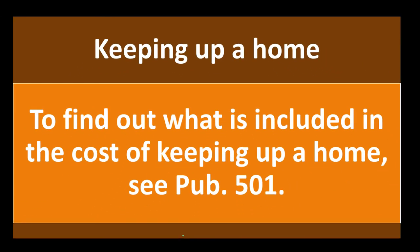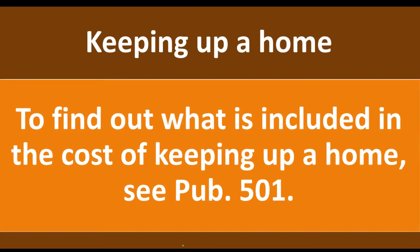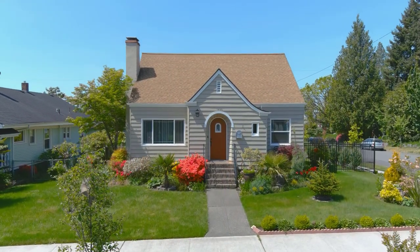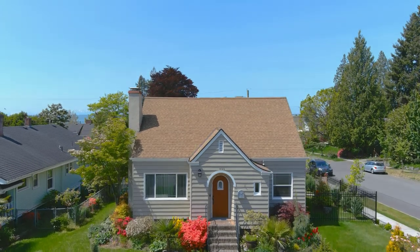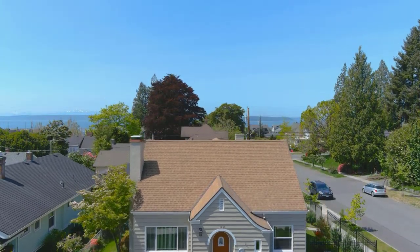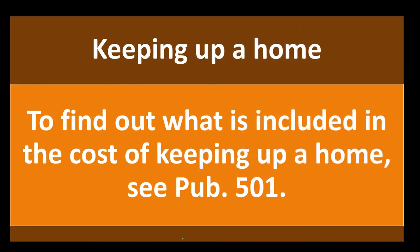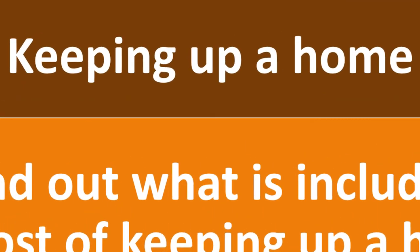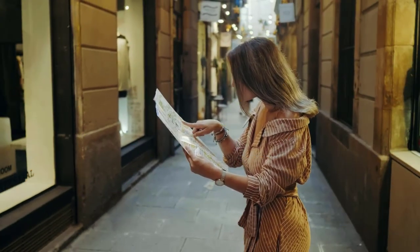Keeping up a home — to find out what is included in the cost of keeping up a home, see Publication 501. It's usually a fairly straightforward thing, but you can imagine gray areas in terms of what qualifies for keeping up a home given the fairly vague wording. If it becomes a gray area, you can look at Publication 501, which you can find on the IRS website, irs.gov.